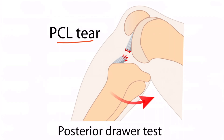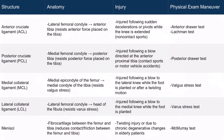The medial collateral ligament, or MCL, runs from the medial epicondyle of the femur to the medial condyle of the tibia, and it resists valgus stress. Valgus stress means that force is applied at the knee from the lateral direction. The MCL is often injured following a blow to the lateral knee while the foot is planted, but it may also be injured after a twisting motion. The exam maneuver used to identify an MCL injury is the valgus stress test.